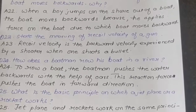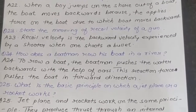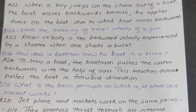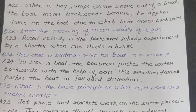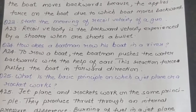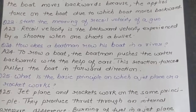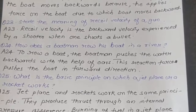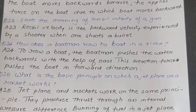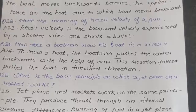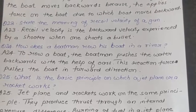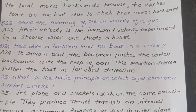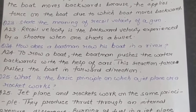Question 23: State the meaning of recoil velocity of a gun. Answer: Recoil velocity of a gun is the backward velocity experienced by a shooter when one shoots a bullet. Question 24: How does a boatman row his boat in a river? Answer: To row a boat, the boatman pushes the water backward with the help of oars; the reaction force then pushes the boat in the forward direction.